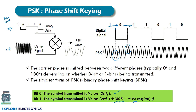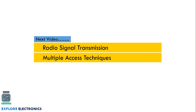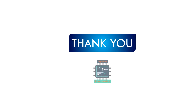The simplest form of PSK is BPSK — binary phase shift keying. These three methods — ASK, FSK, and PSK — are the modulation techniques used in digital transmission. In the next video, let us see radio signal transmission and different multiple access techniques. Thank you.